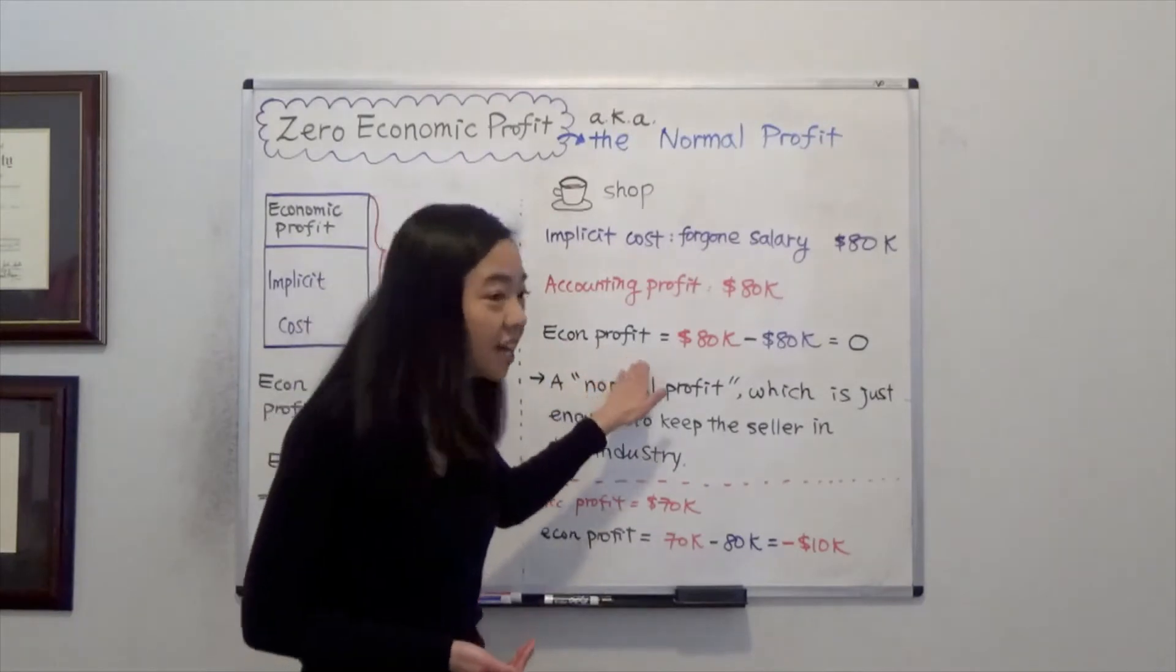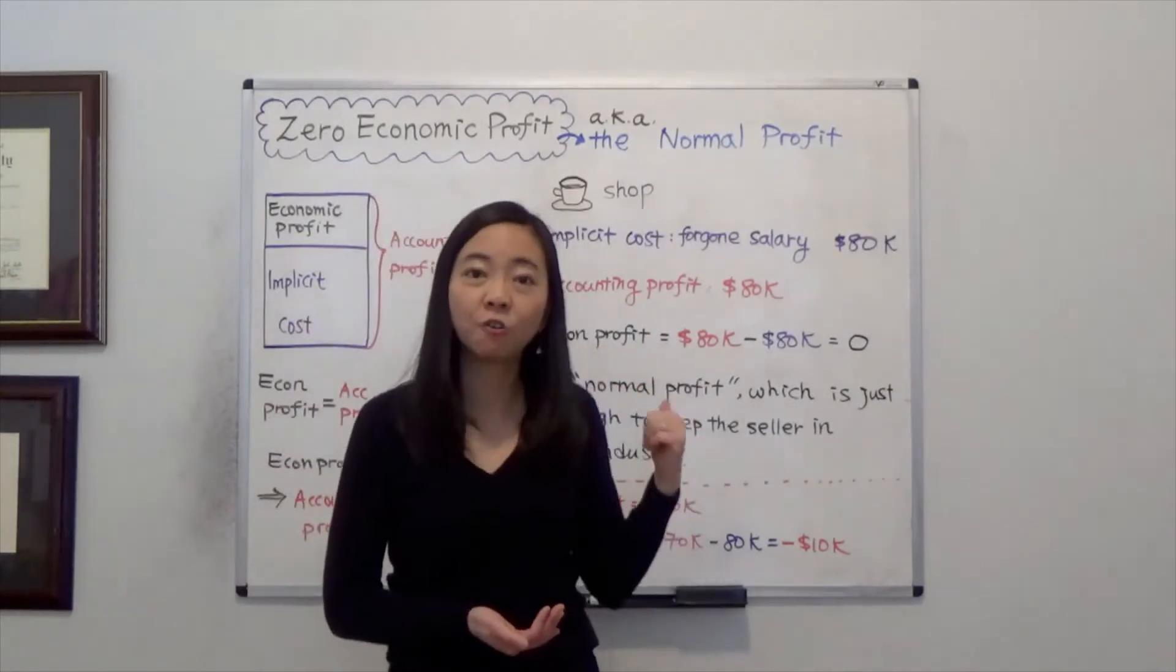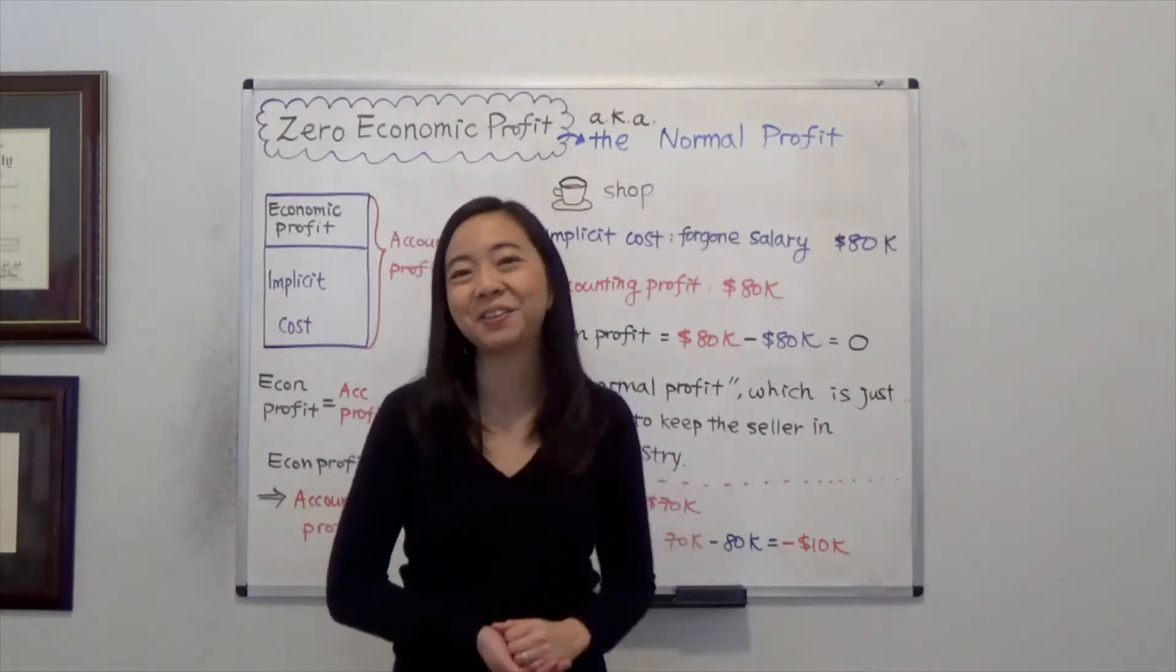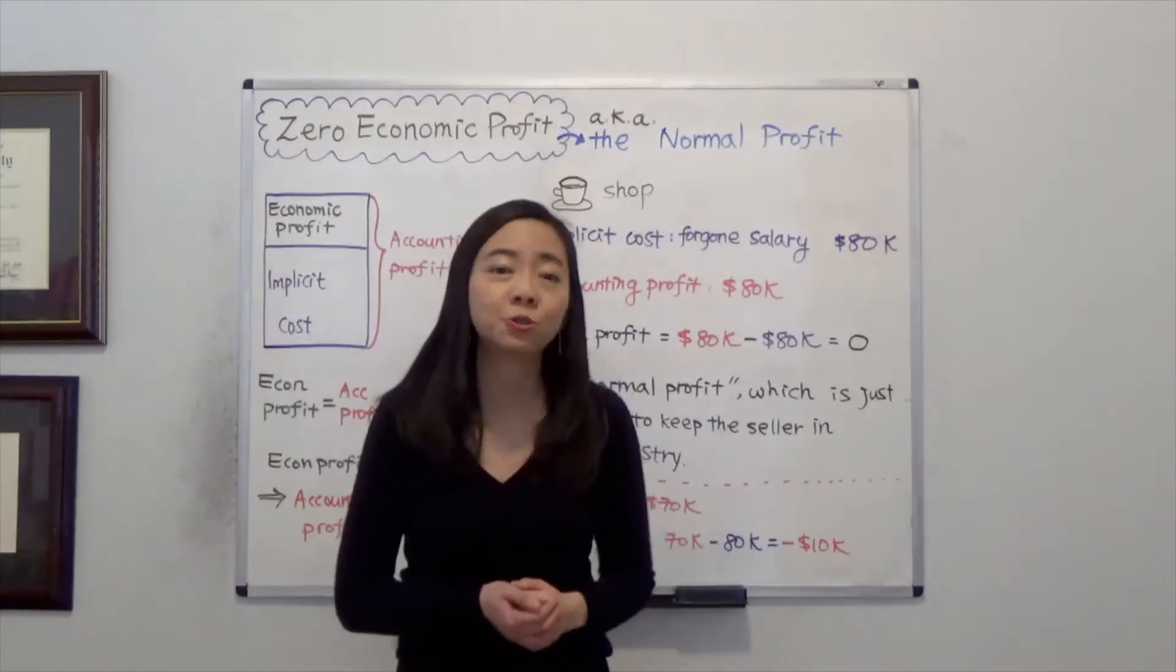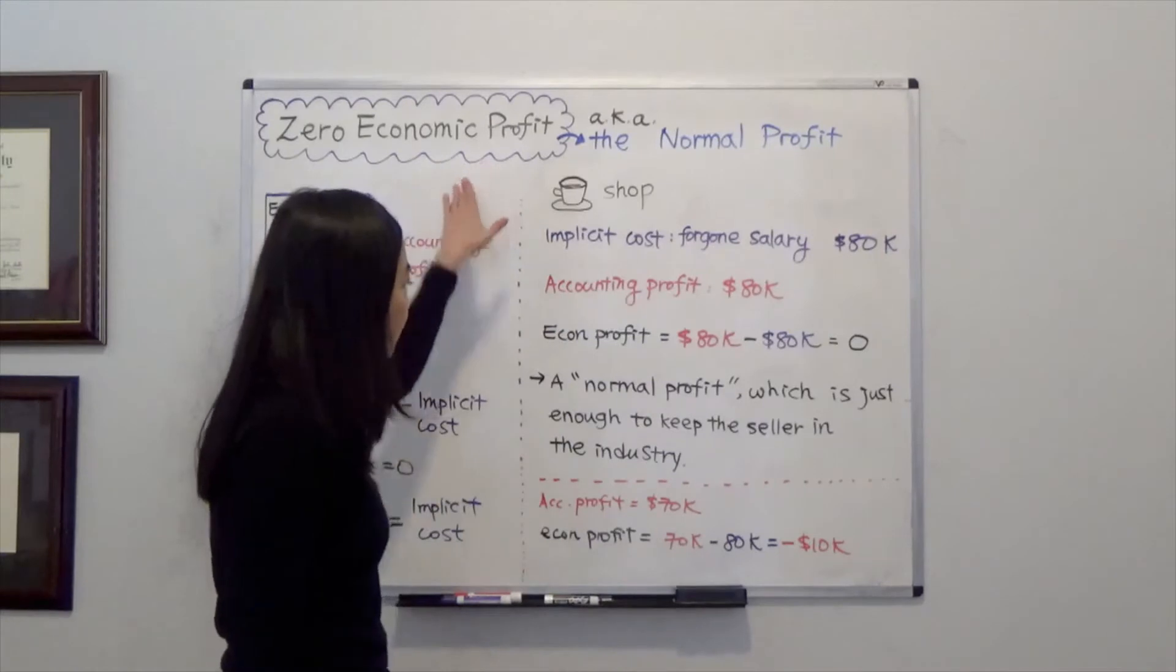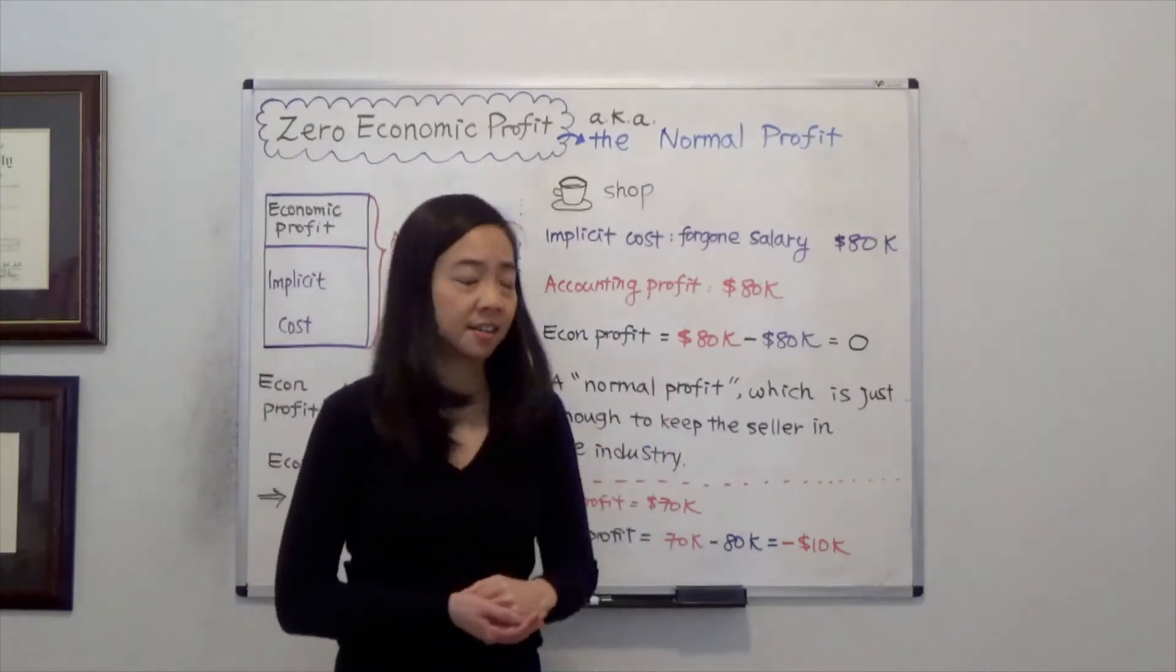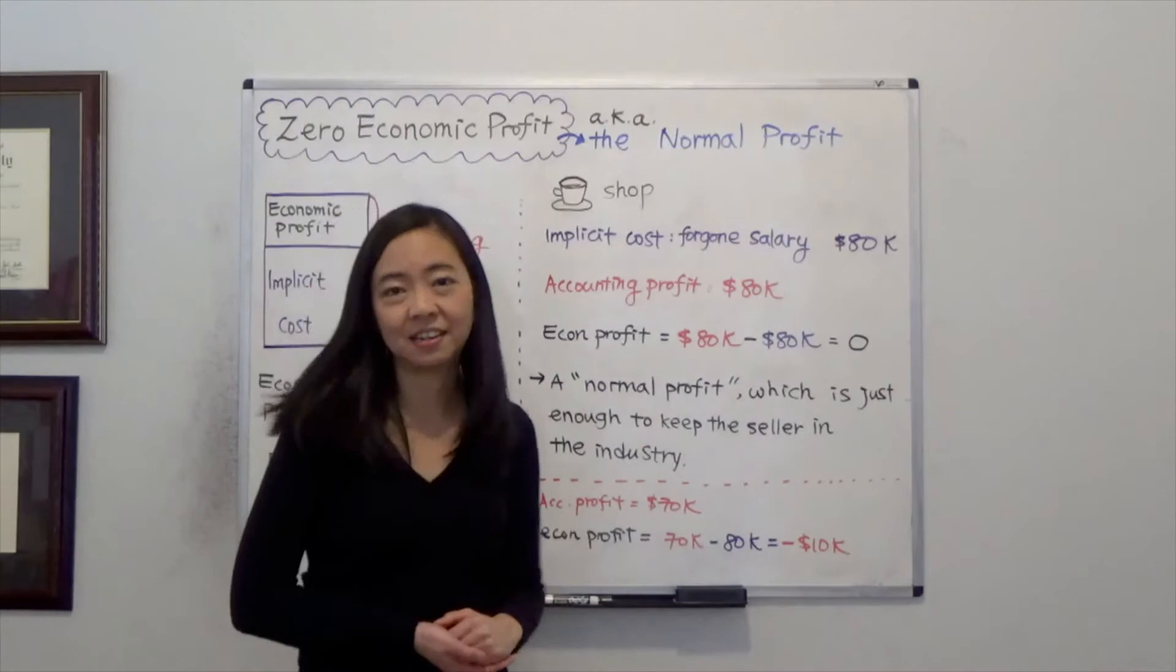So you are making just enough profit from the coffee shop for you to stay in that industry. It doesn't mean that you're miserable. We also call zero economic profit a normal profit, which is just enough for you to stay in the industry.